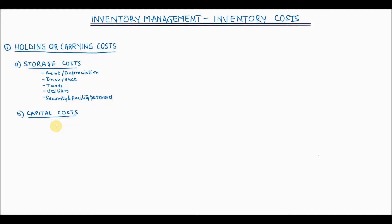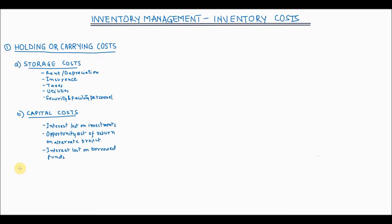If the firm has to borrow funds to maintain inventory, then the capital cost is the interest paid on those funds. So if you have borrowed money to maintain inventory, then basically you have to pay interest on those funds. Now let us look at the third type, which is obsolescence cost.